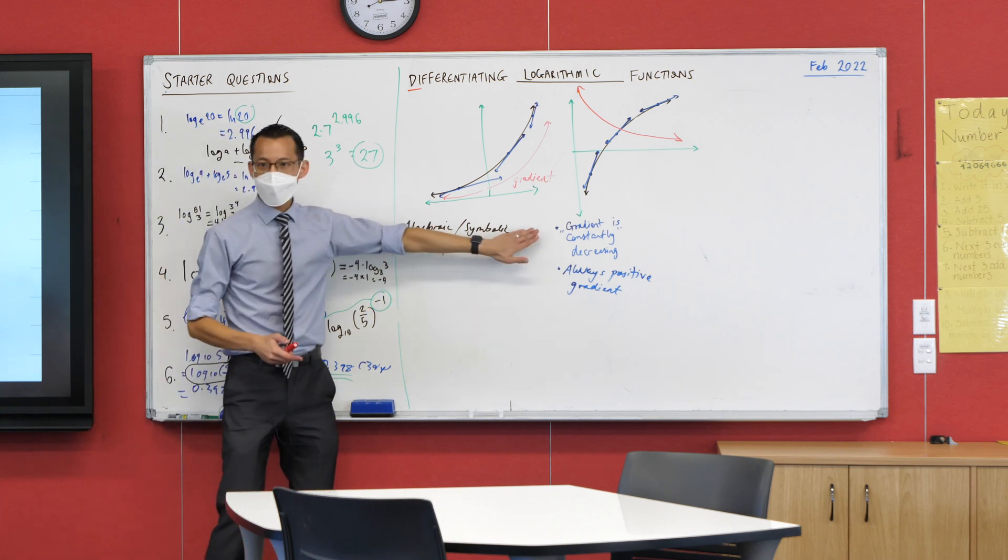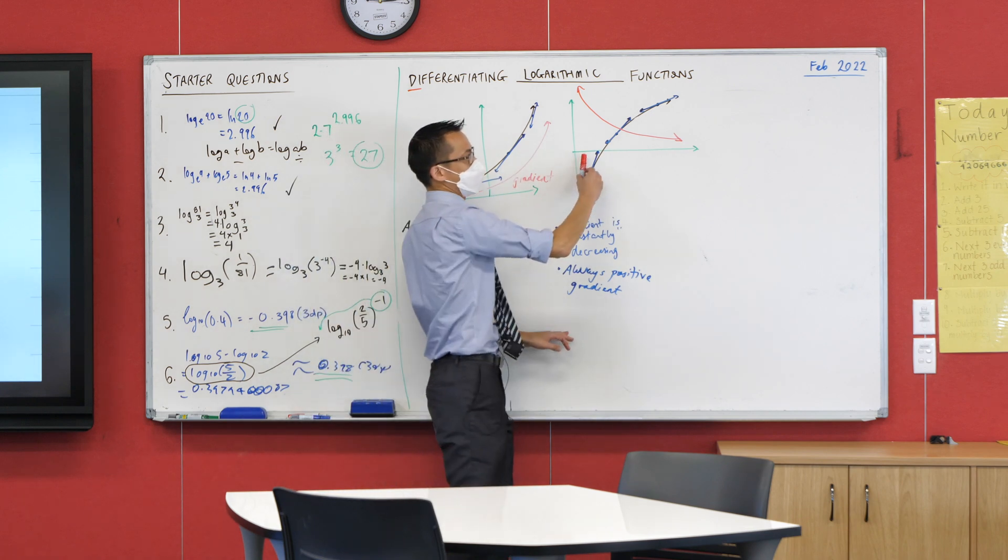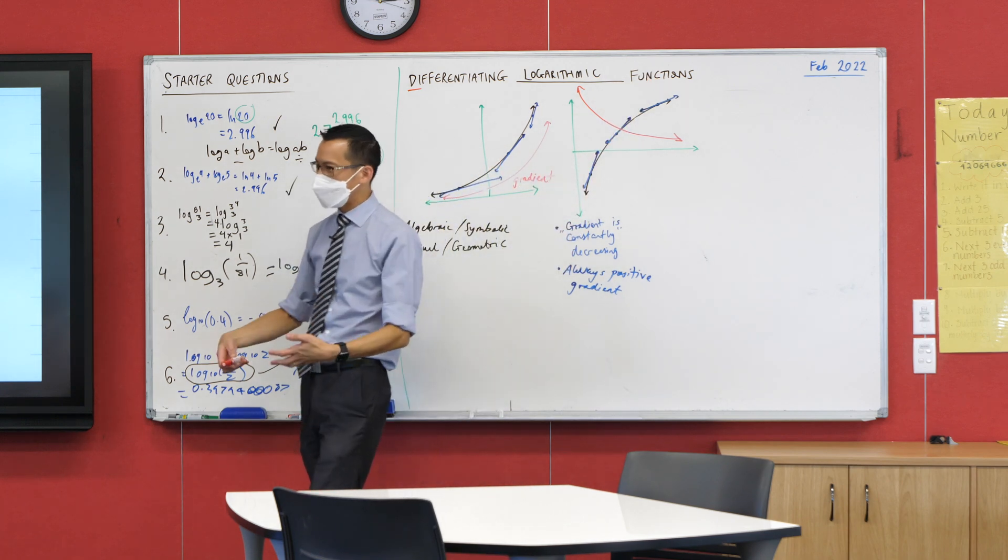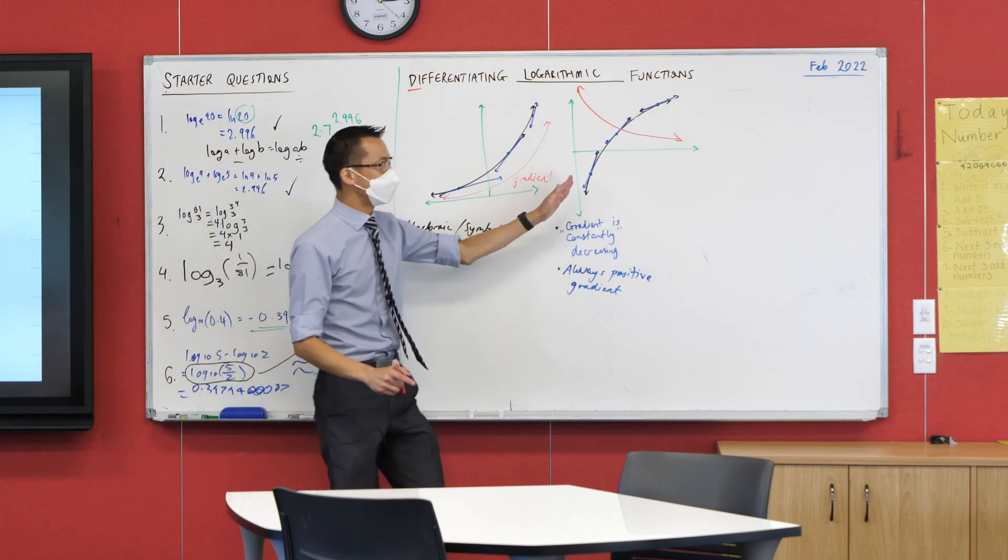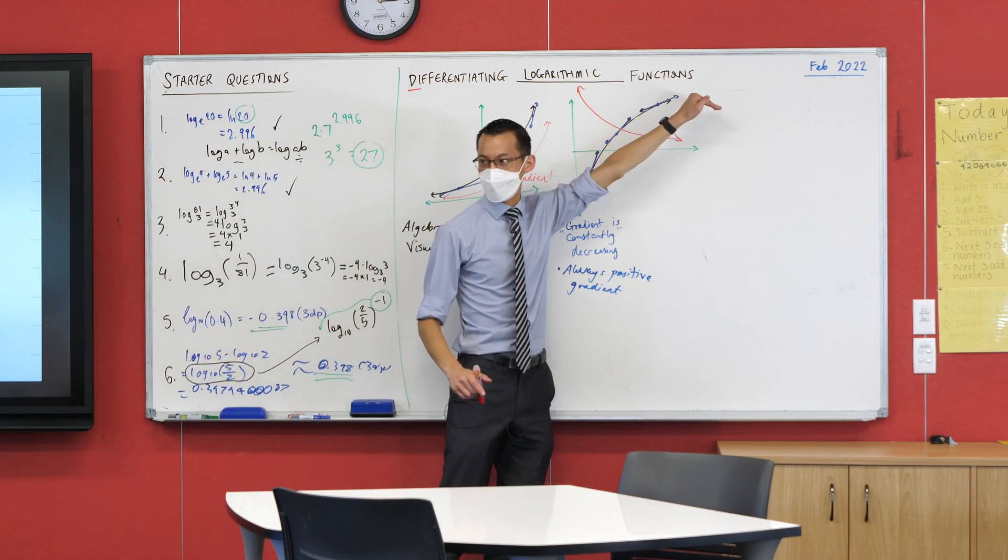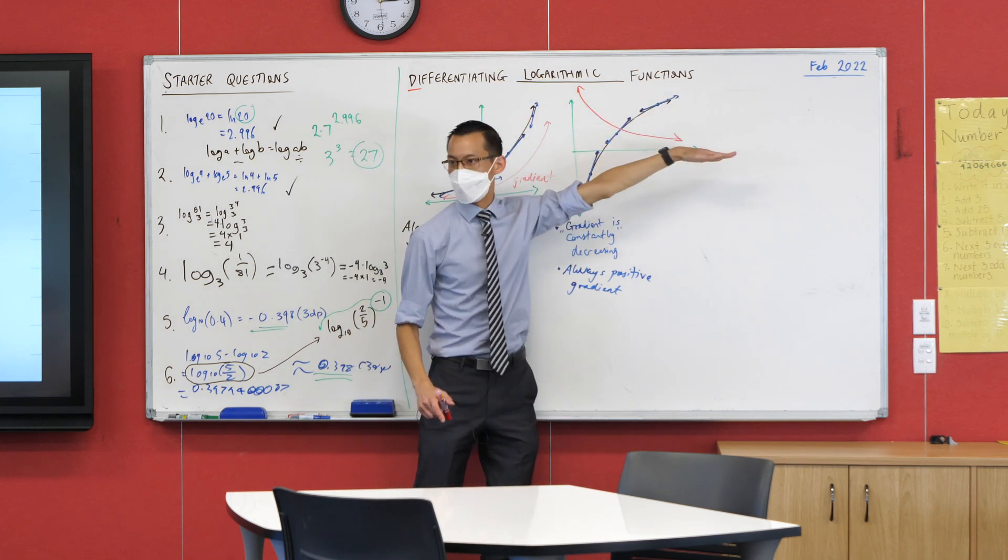But it's decreasing. I noticed a lot of you did something a bit like this. It's like, oh, I think it just kind of follows, right? But if it does that and goes up, you're getting steeper and steeper and steeper if that's what the gradient is doing. But you all told me it's getting shallower and shallower and shallower. So shallower gradient corresponds to a lower value from my red graph.